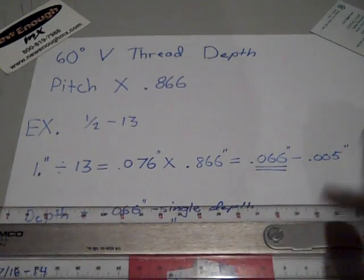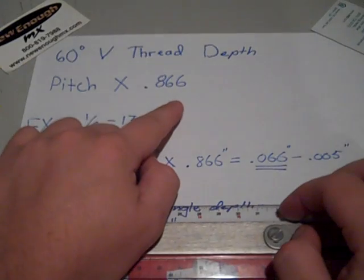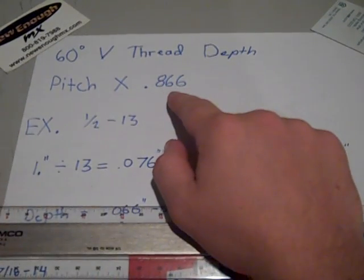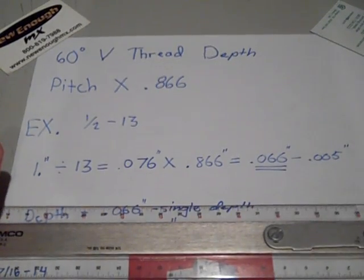Basically it's your pitch times 0.866. So you might be wondering what is 0.866? Point 0.866 is the cosine of 30 degrees, that's all it is.